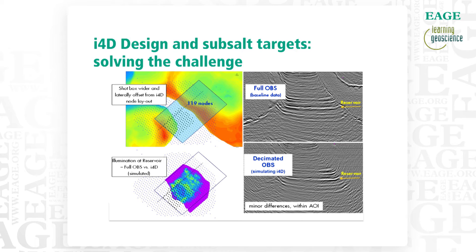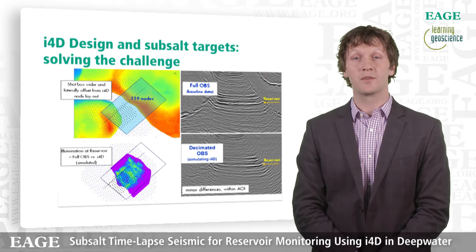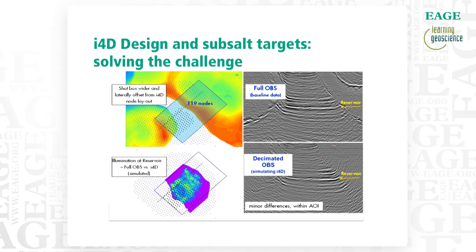After that ray tracing and understanding that we needed to move the shot box up, we subsetted the shots from the 2010 baseline, remigrated that new shot box into the new node patch, and that gave us the image shown on the bottom right. So you're comparing the top right — the original 2010 image from the full field OBS with the full shot box — to the bottom right, which is the decimated node patch and decimated shot box.